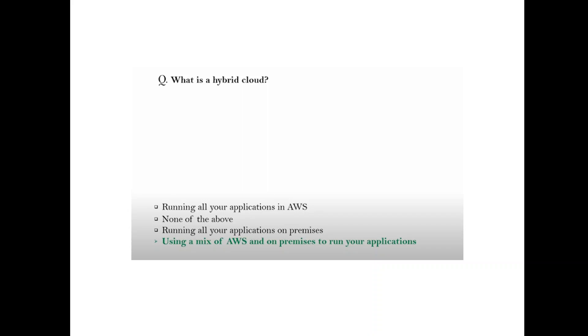Question: What is a hybrid cloud? A hybrid cloud is a mix of public and private — using a combination of AWS and on-premises to run your applications.